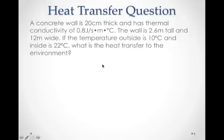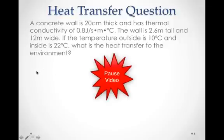So now it's your chance to do a heat transfer question. A concrete wall is 20 centimeters thick and has thermal conductivity of 0.8 joules per second meters degrees Celsius or Kelvin. This can be Kelvin too because it's a change in temperature that we talk about. That's why it can be either. The wall is 2.6 meters tall and 12 meters wide. That's a pretty big wall. If the temperature outside is 10 degrees Celsius and the temperature inside is 22 degrees Celsius, what is the heat transfer to the environment? And so this could be in watts too. When you get your answer, your answer can be in watts. A little hint here, be careful to convert this to meters first. Take a little time. Come back when you're ready for the answer.